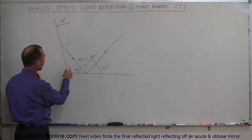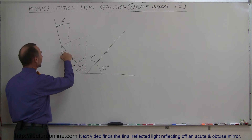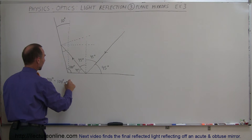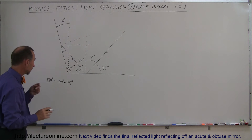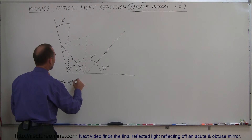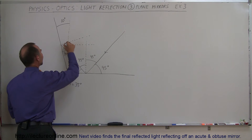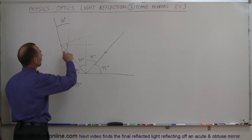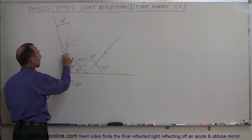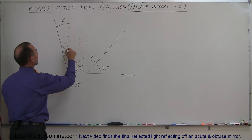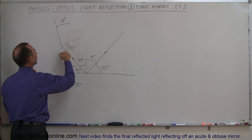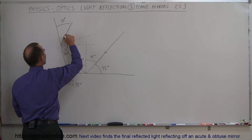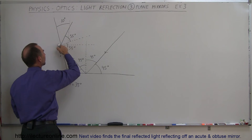Now, this angle here is 100 degrees — 90 plus 10 — which means that this angle right here is 180 degrees minus the 100 degrees of that angle minus the 45 degrees of that angle, because three angles in a triangle always must add up to 180 degrees. So that's 180 minus 100 minus 45, giving a 35-degree angle. Since this total angle must be 90 degrees, we subtract 35 from that, giving a 55-degree angle of incidence on the second mirror. The angle of reflection must also be 55 degrees.